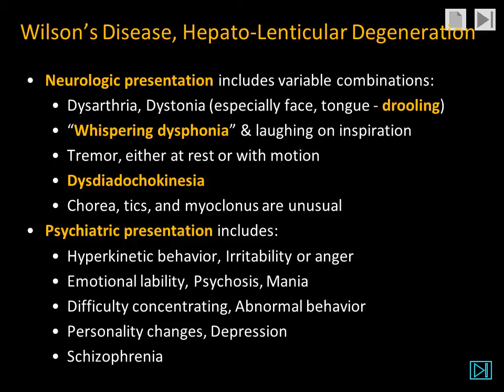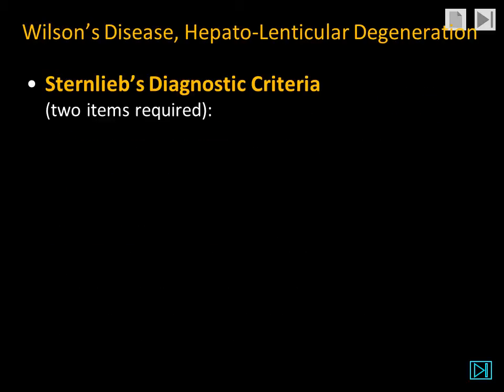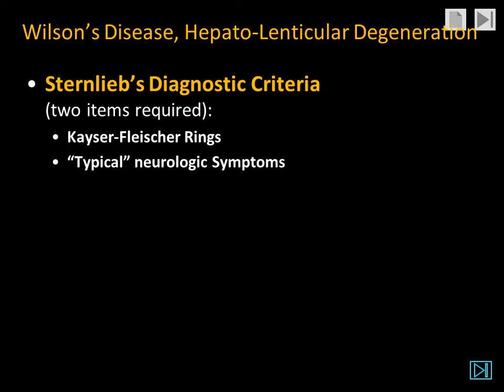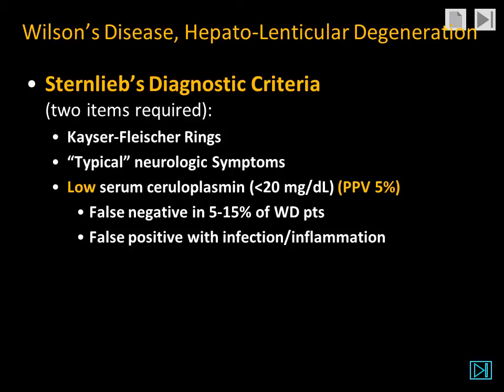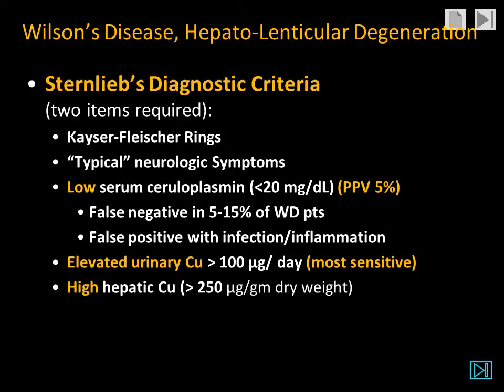The psychiatric presentation is very variable. The diagnostic criteria — Sternlieb criteria — require two items from this list: Kaiser-Fleischer rings, typical neurologic symptoms, a low serum ceruloplasmin, elevated urinary copper, and high hepatic copper. Four of these were present in this patient.